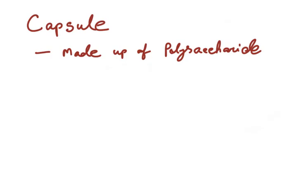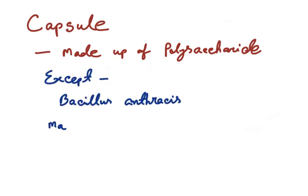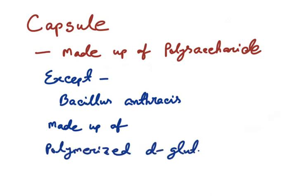Now about the non-essential structures, first of all the capsule. The capsule is a layer that covers the entire bacterium, composed of polysaccharide except in Bacillus anthracis which has a capsule composed of polymer of D-glutamic acid.